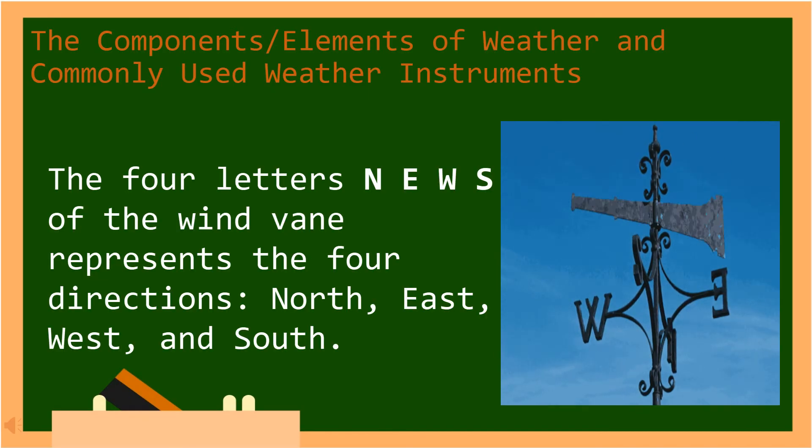The four letters N, E, W, and S of the wind vane represents the four directions, which are north, east, west, and south.